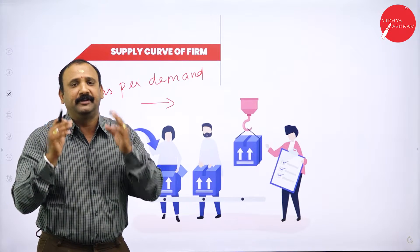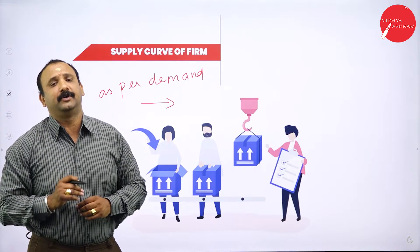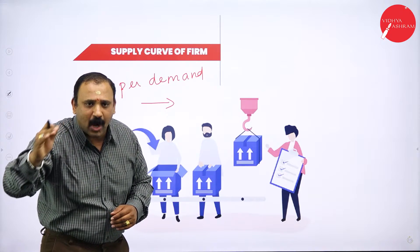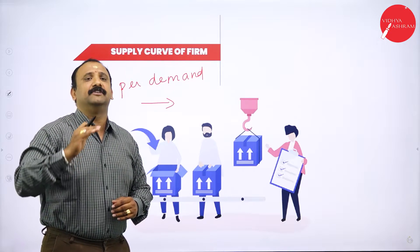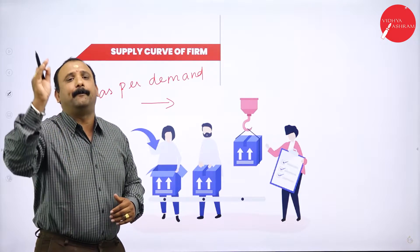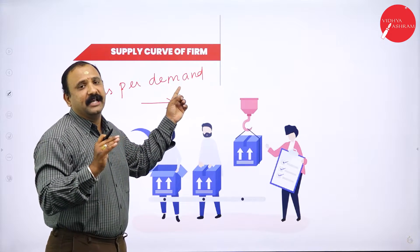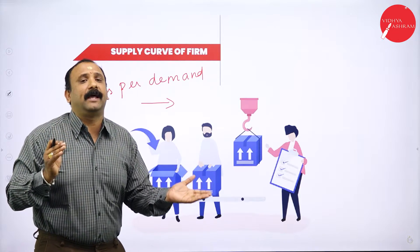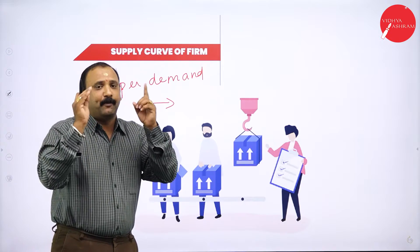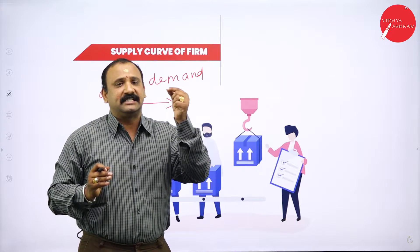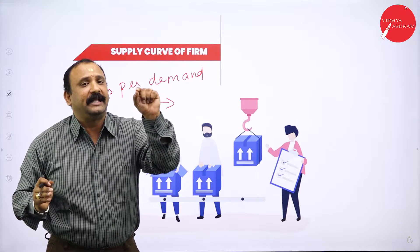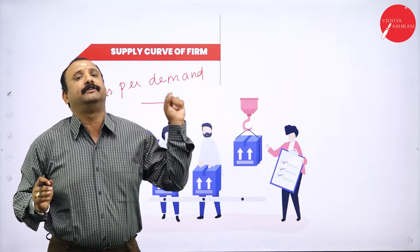The supply curve is very important. If you see the demand curve, it slopes downwards. The supply curve is just the opposite — it moves upwards. Why does it move upwards? Because it is based on demand. If demand increases, the supply of the product will also tend to increase. The supply for any product in the market is purely dependent on the factors of demand.